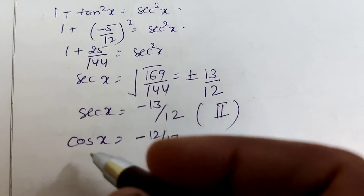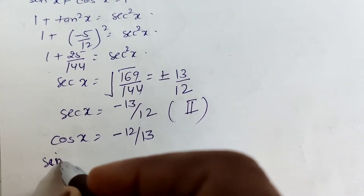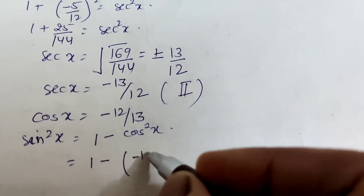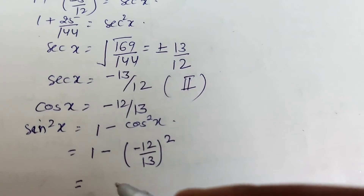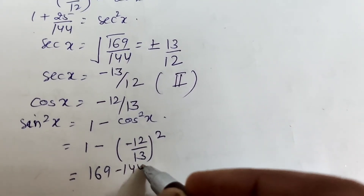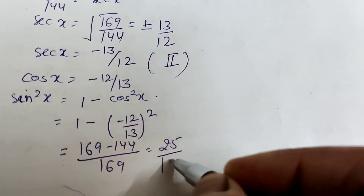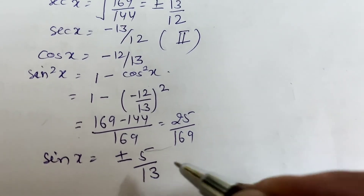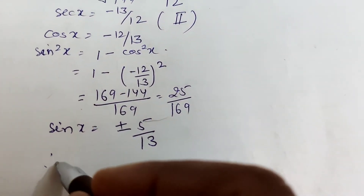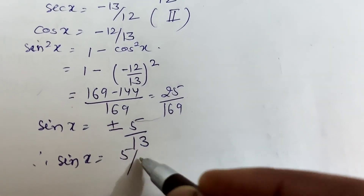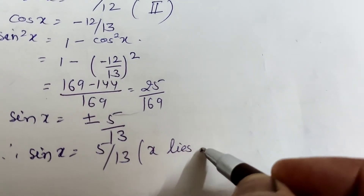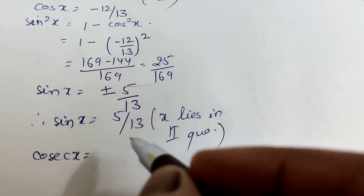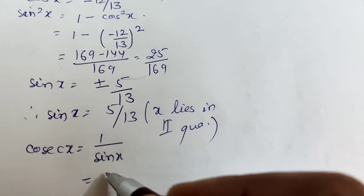With cos x = -12/13, using sin²x = 1 - cos²x = 1 - (-12/13)² = (169-144)/169 = 25/169, so sin x = ±5/13. Since x lies in the second quadrant, sin x = +5/13. Therefore cosec x = 1/sin x = 13/5, which is also positive as expected in the second quadrant.